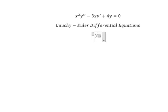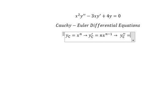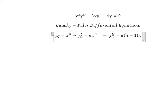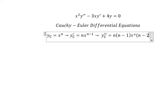We set yc equals x to the power of n. Then we take the first derivative, which is n times x to the power of n minus 1. Next we take the second derivative, which is n times n minus 1 times x to the power of n minus 2.